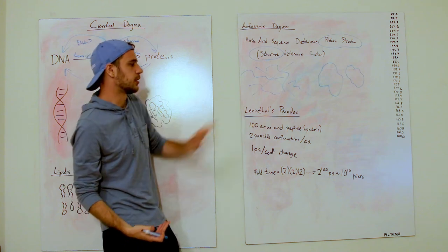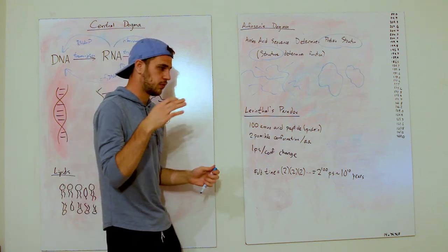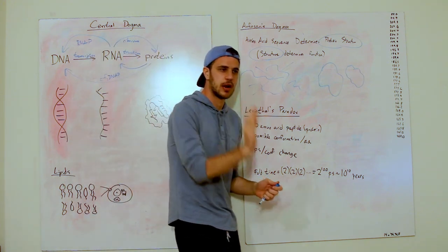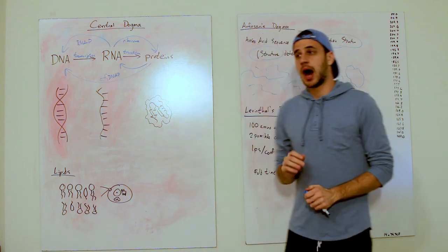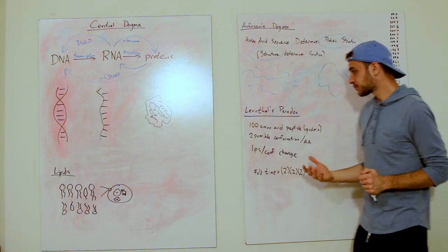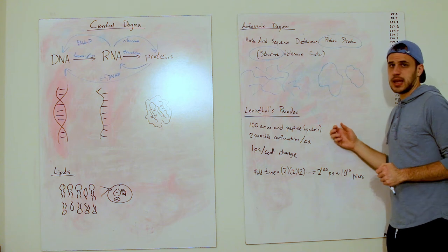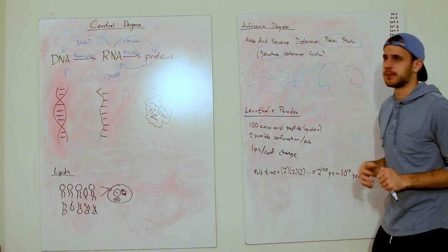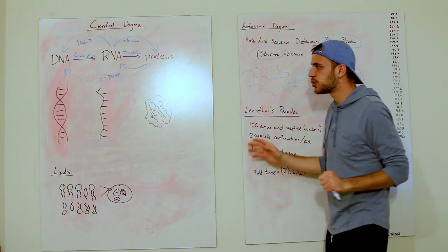So it just makes some basic, very basic assumptions on the biology. Let's take a 100 amino acid peptide of protein. 100 amino acids.